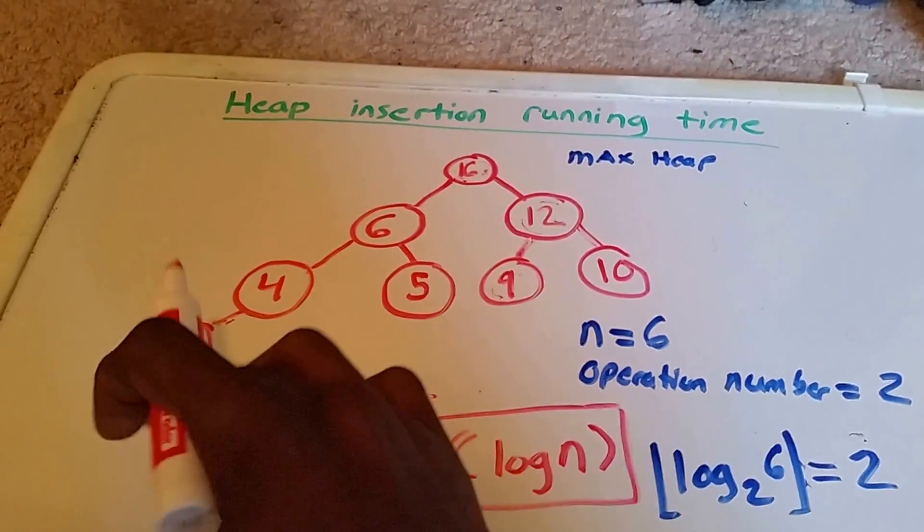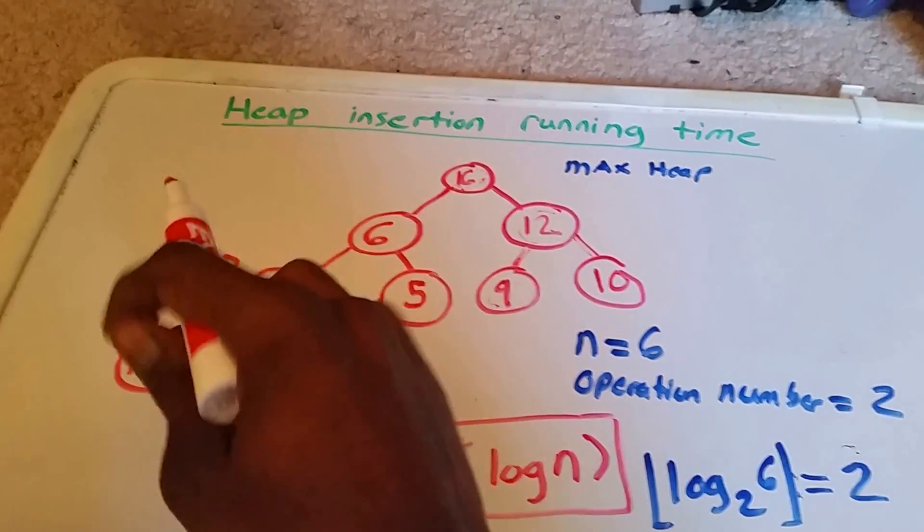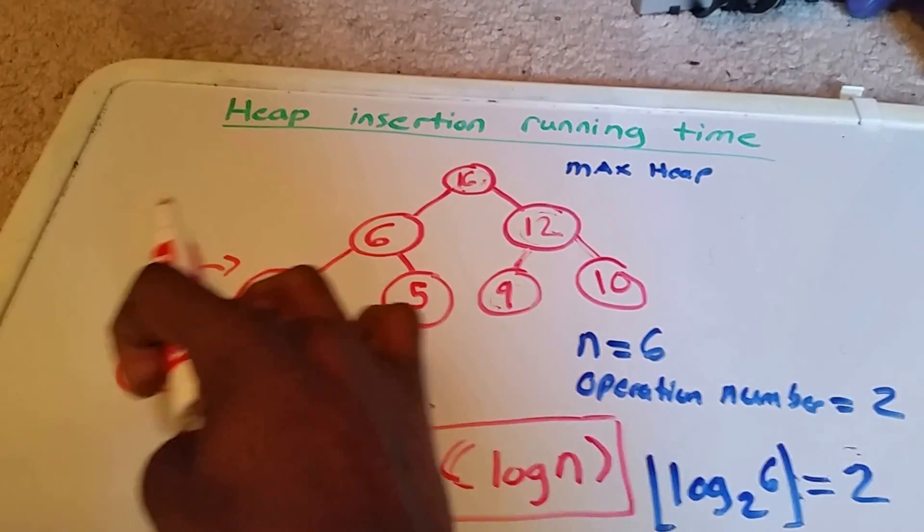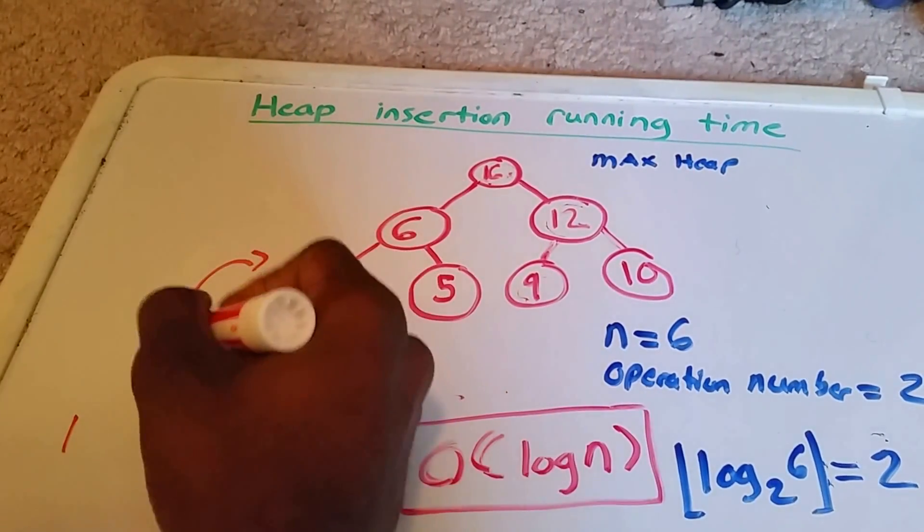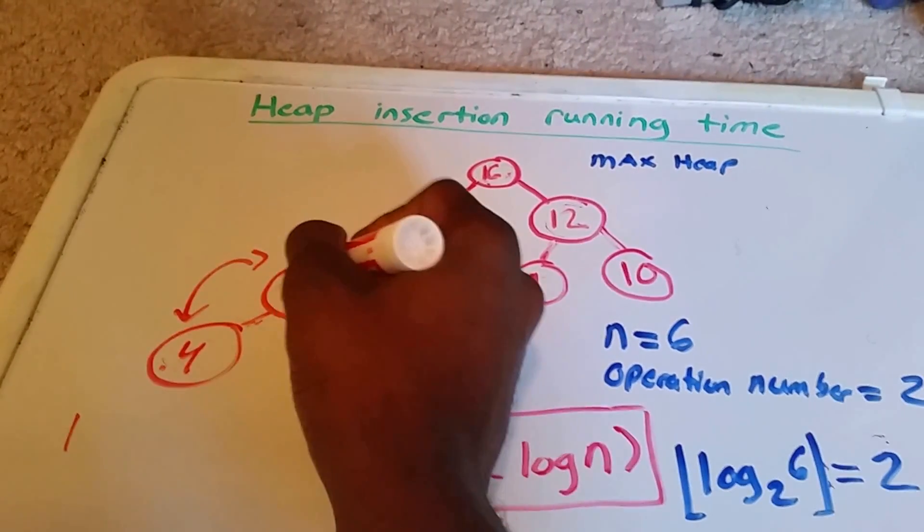And what I'll do is we'll swap one time here, the 4 and the 17. That's one operation. I want to put a 1 here. And that was a 4 and a 17.